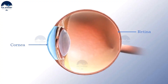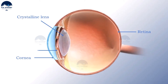Most of the refraction for the light rays entering the eye occurs at the outer surface of the cornea. The crystalline lens merely provides the finer adjustment of focal length required to focus objects at different distances on the retina. Behind the cornea, we find a structure called the iris.